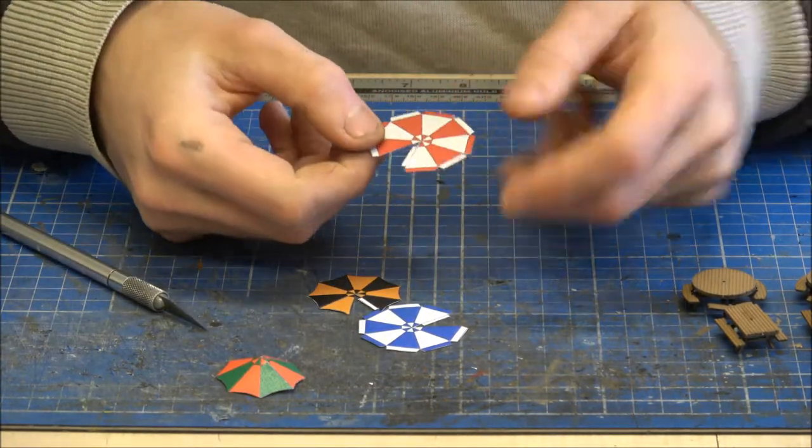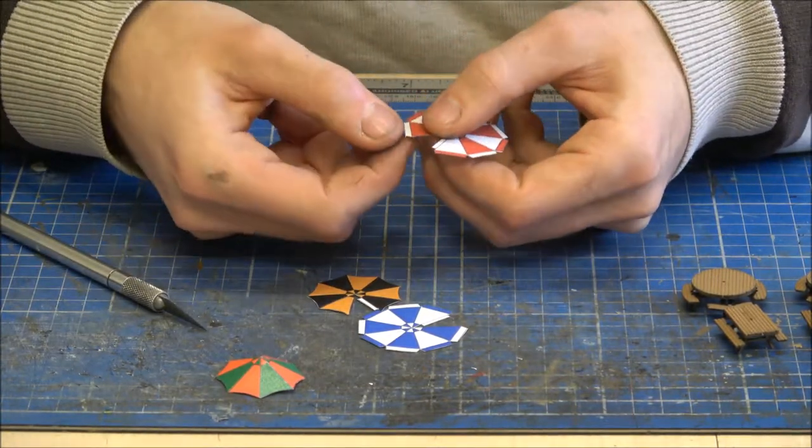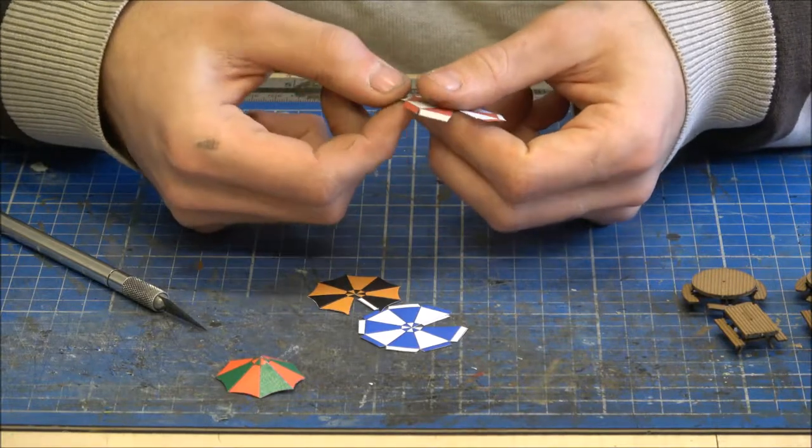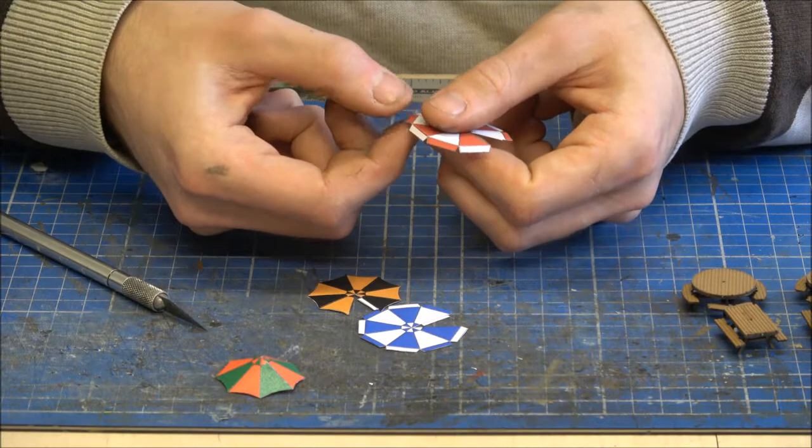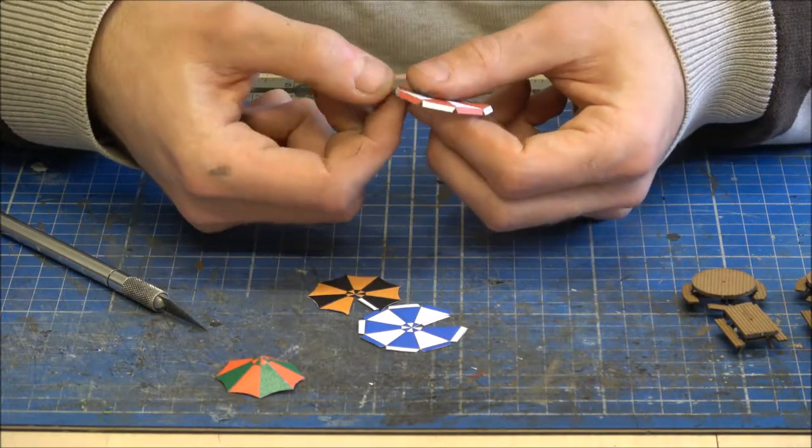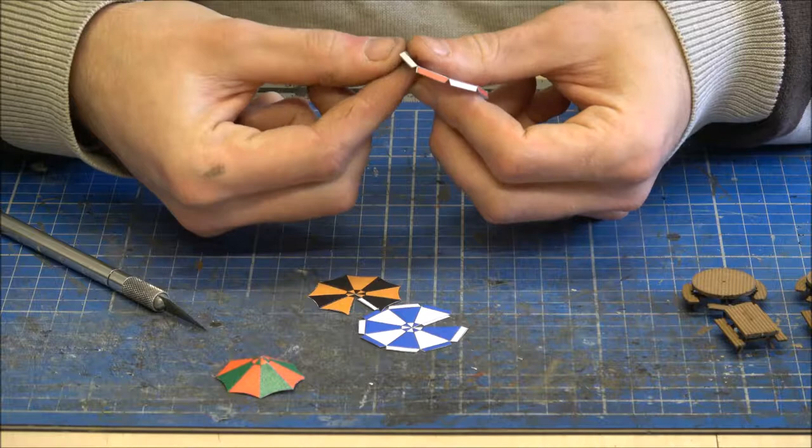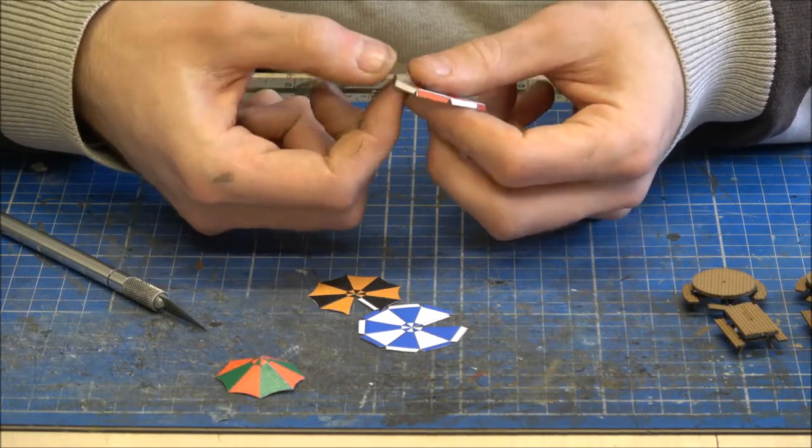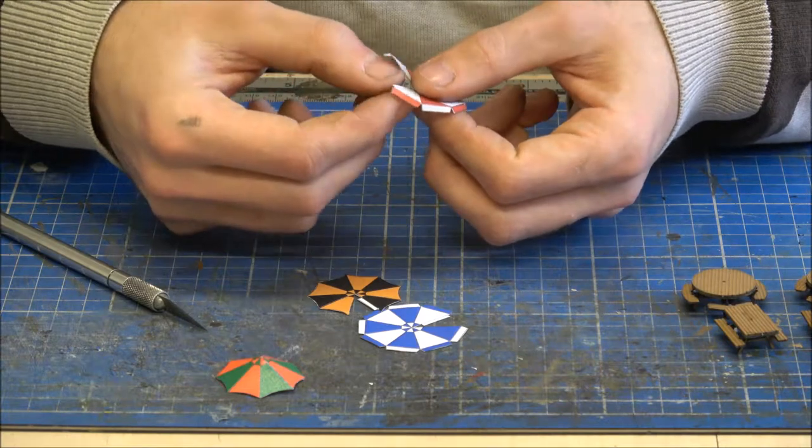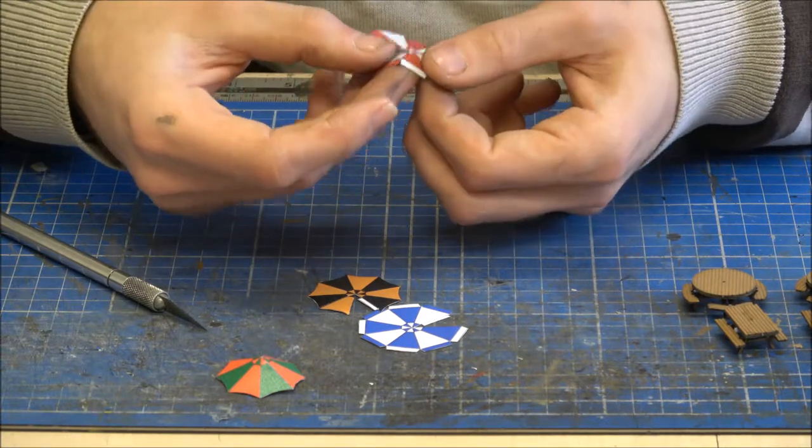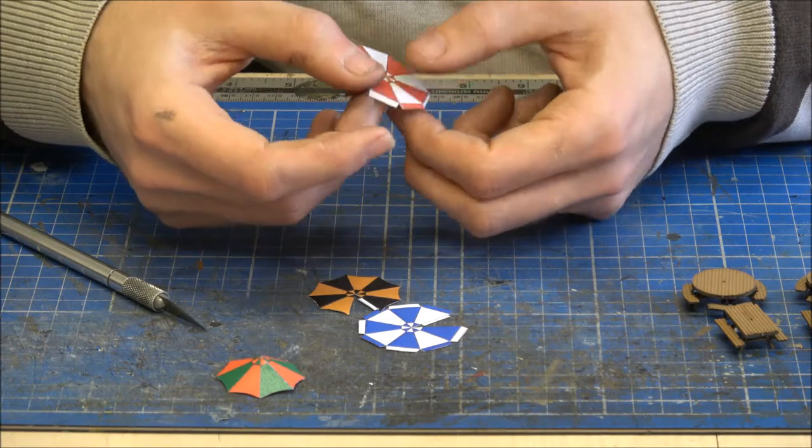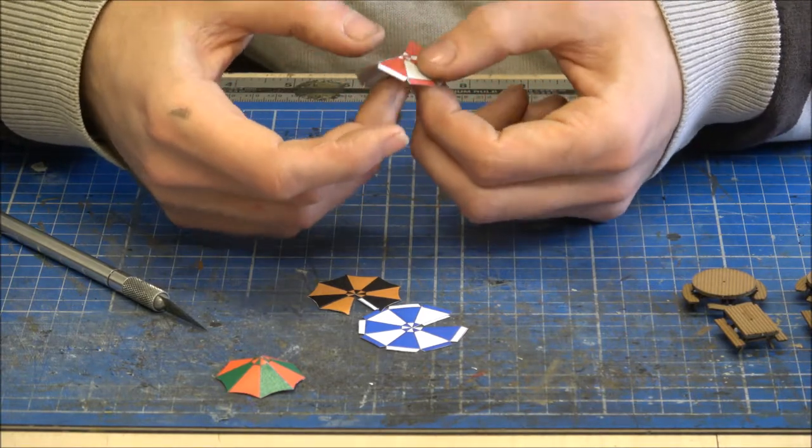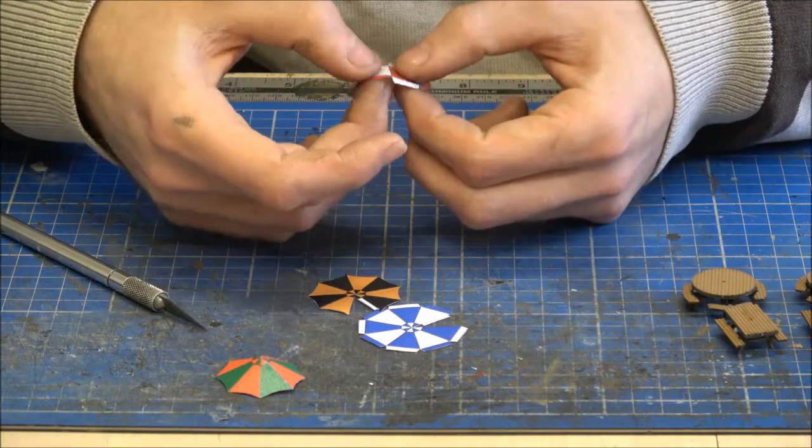With these ones with the extra bits around the edge, I always fold the ends over first. Because it's a little bit easier to do it whilst it's still flat. And then again as with the other one just fold it on the little ridges to create the shape.